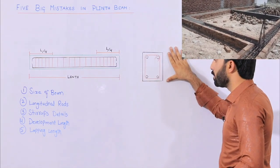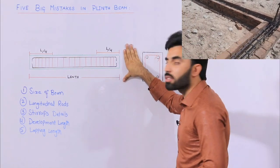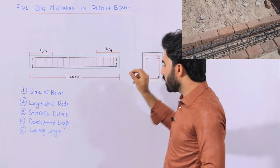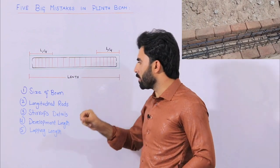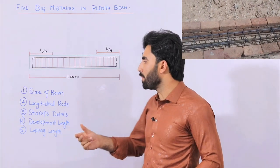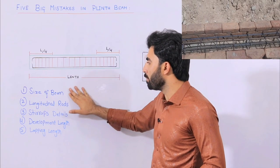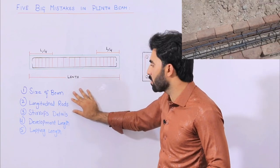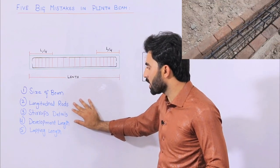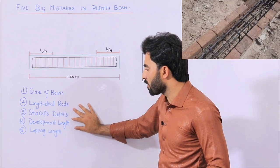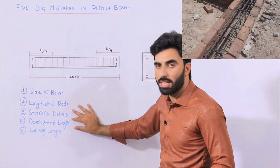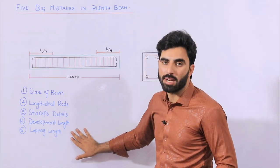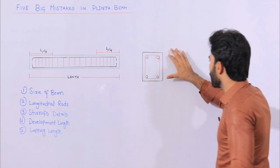You can see this is the section of plinth beam and this is its long section. The first mistake people are doing, specially in plinth beam, is the size of beam. The second one is for longitudinal bars. The third one is for stirrups details. The fourth one is for development length. And the last one is for lapping length.